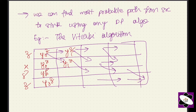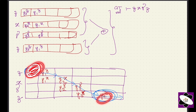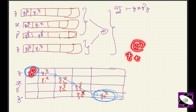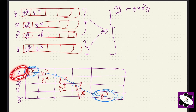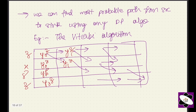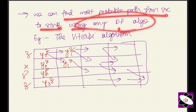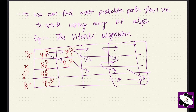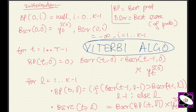We find the most probable path from source (top-left) to sink (bottom-right). Each cell represents the probability of a symbol occurring at a given timestamp. For example, the probability of symbol z at timestamp 0 is y_0 of s(0). We can use dynamic programming — for example, the Viterbi algorithm — to find the maximum likelihood path.